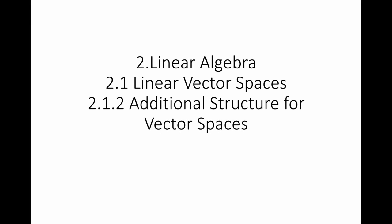In the previous section, we introduced what linear vector spaces are — the basic definitions of linear vector spaces. In this section, we're going to define some measures of the vectors in linear vector spaces. In particular, we want to define the sizes of the vectors, the distance between vectors, and the angle between vectors.